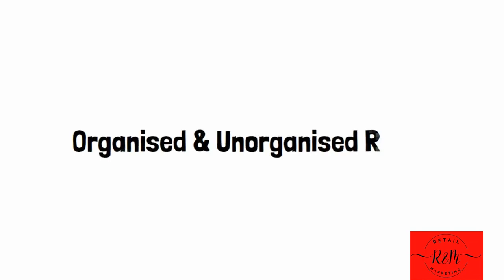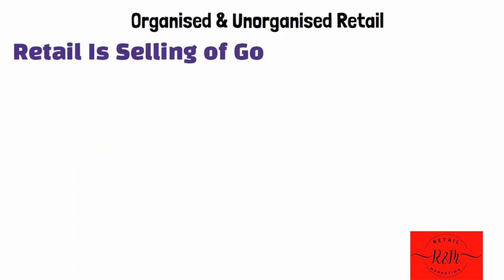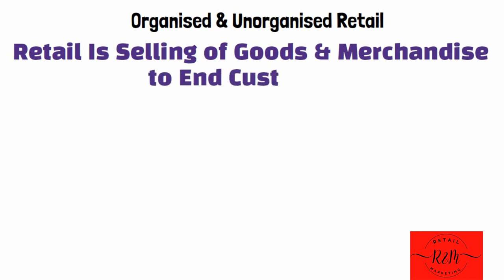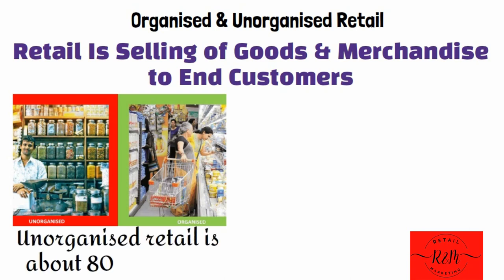Welcome to my channel. In today's video, let us discuss about organized retail and unorganized retail. The term retail stands for selling of goods and services to the end customers from a particular location. The retail sector can be classified as organized and unorganized retailing, and in India unorganized retailing is somewhere around 80 to 85 percent, meaning only 15 to 20 percent of Indian retailing is organized.